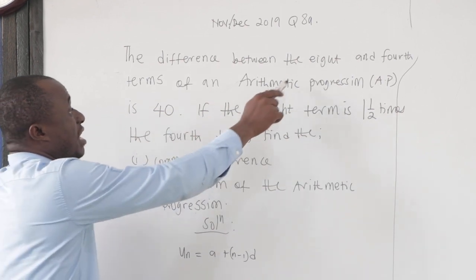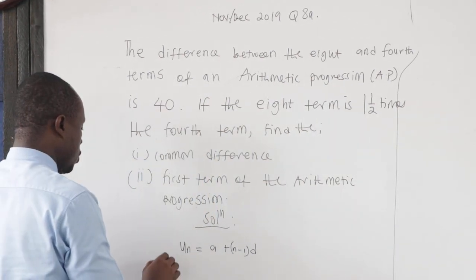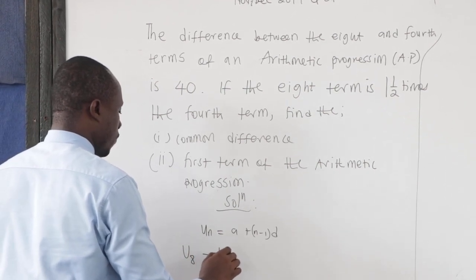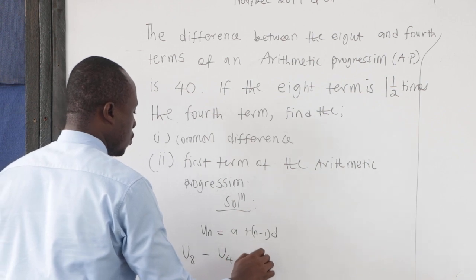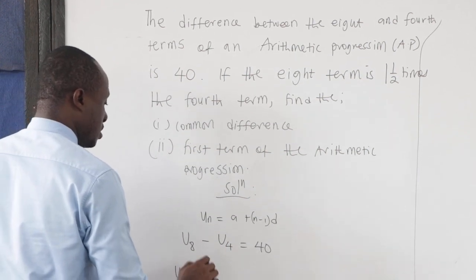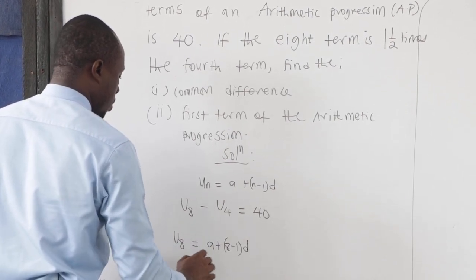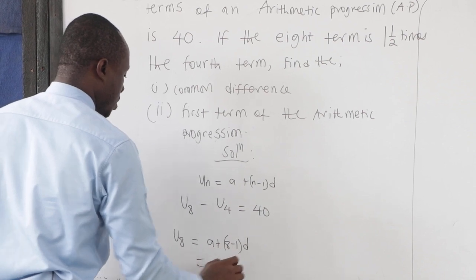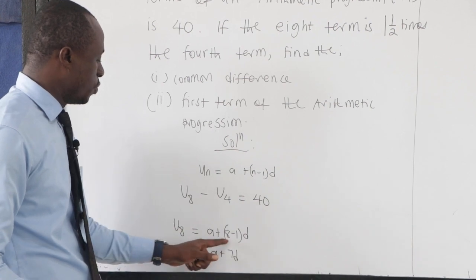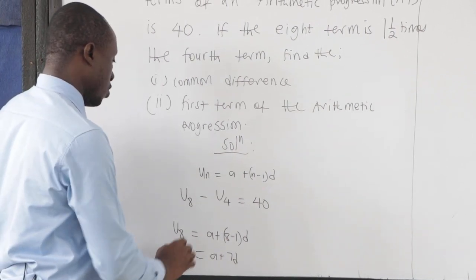We have been told that the difference between the 8th and the 4th term of an AP is 40. It means that u_8 - u_4 = 40. Now what is our u_8? Our u_8 is a + (8-1)d, which is a + 7d. So u_8, wherever you see n, you put 8 there. 8 minus 1, we have 7d. That is our u_8.